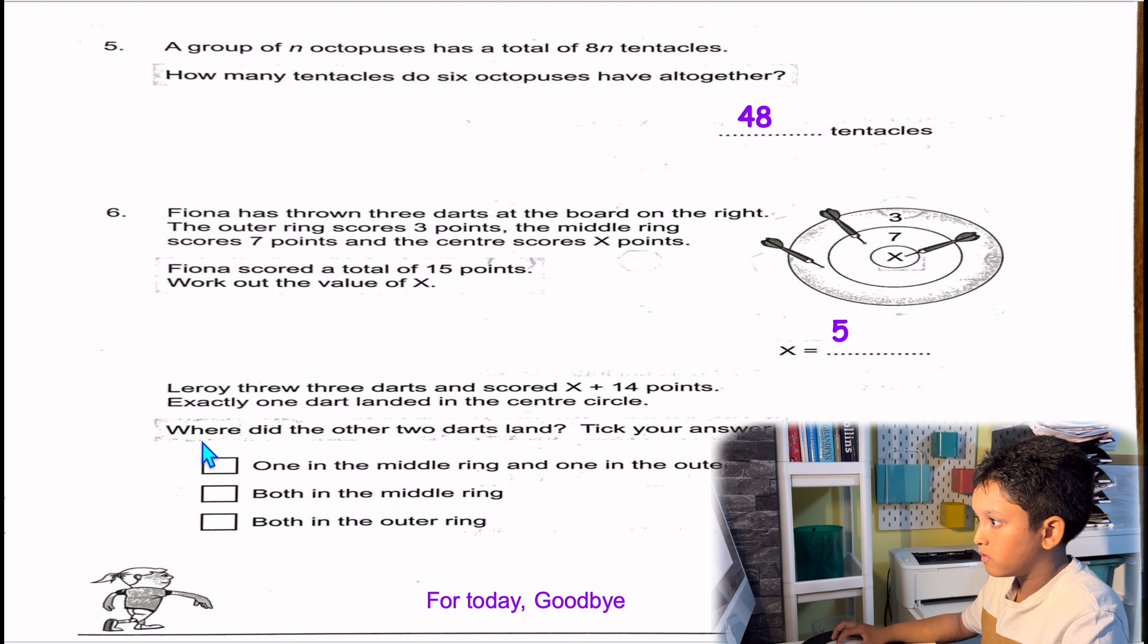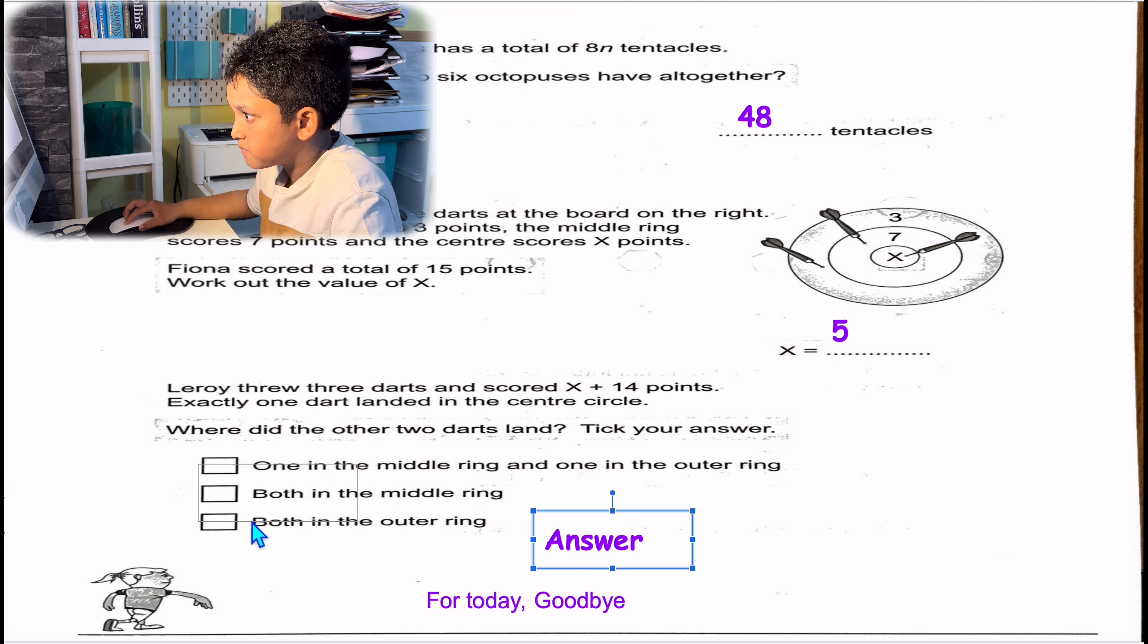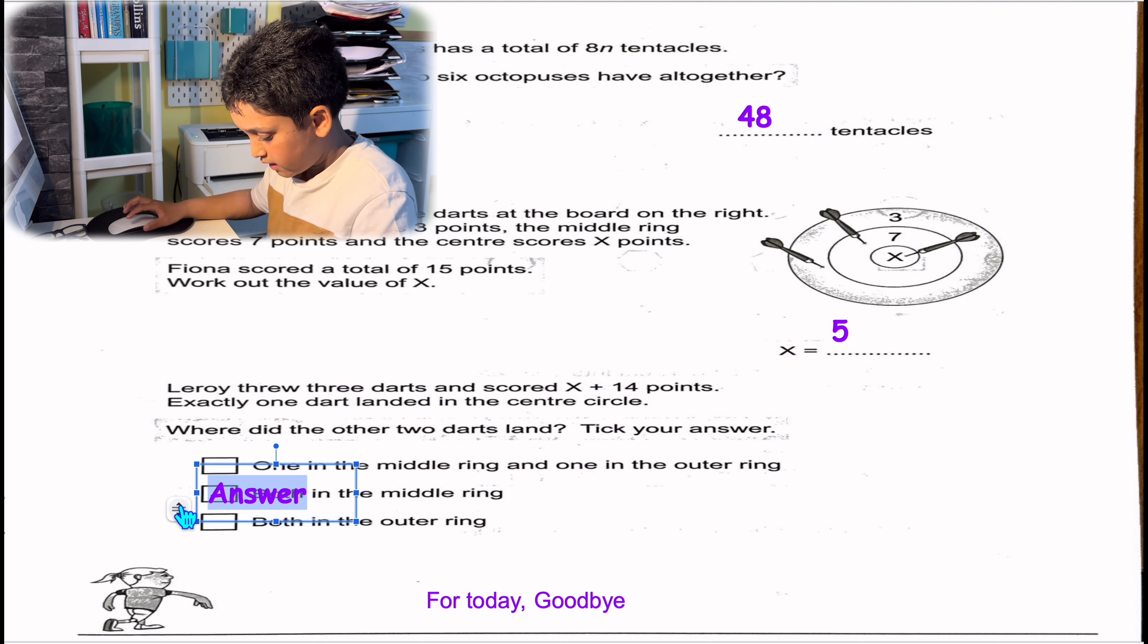Question 8: Leroy threw 3 darts and scored X plus 14 points. Exactly 1 dart landed in the centre circle. Where did the other 2 darts land? Tick your answer. Leroy threw 3 darts and scored X will be 5. So take away 5 from here, she'll have 14 points there. Just, she had her arrows on 7 because 7 times 2 is 14. Both in the middle ring. Yes, that's correct.